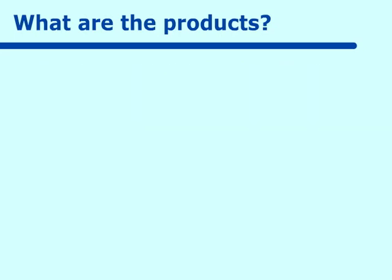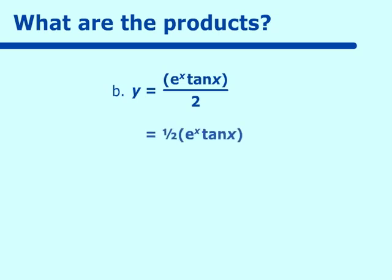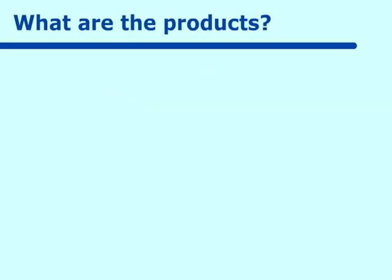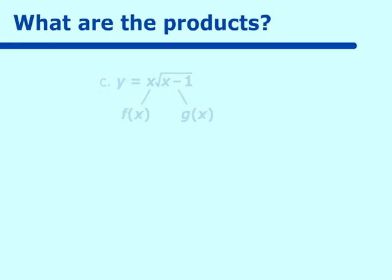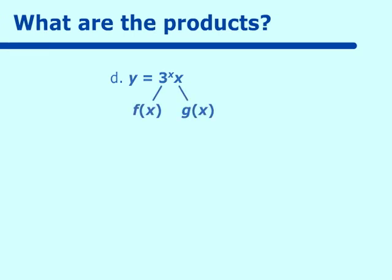For the next problem, y equals e to the x times tan x over 2. The fraction one-half can be taken out as the constant multiplier, leaving e to the x times tan x. That makes e to the x our f of x and tan x our g of x. Next, x and square root of x minus 1: x is f of x and square root of x minus 1 is g of x. Then, 3 to the x times x: 3 to the x is f of x and x is g of x.